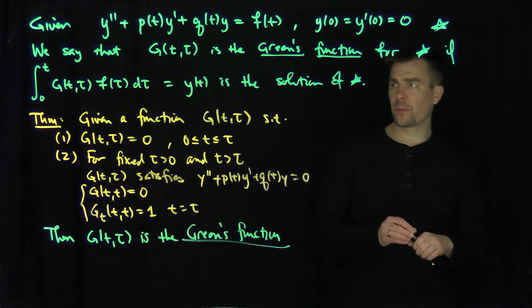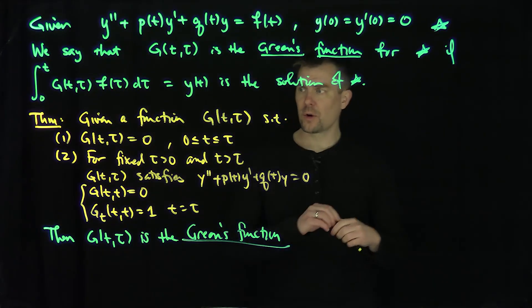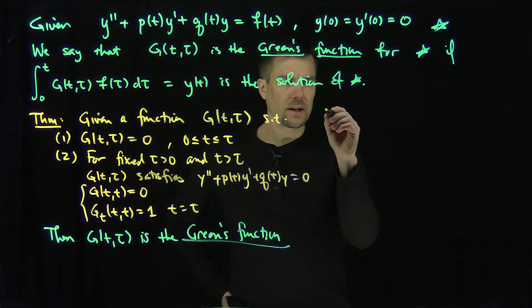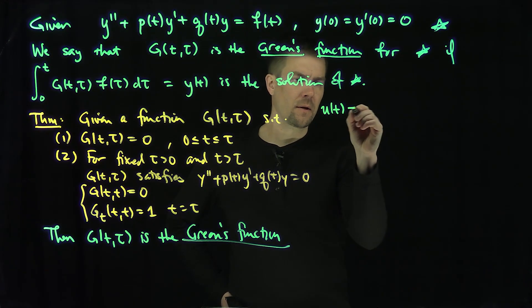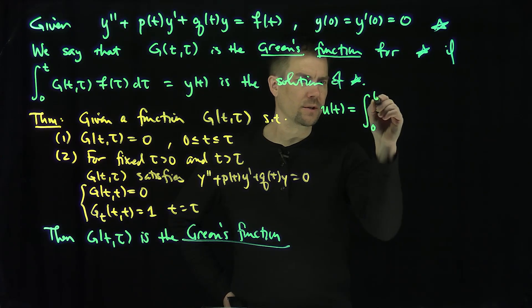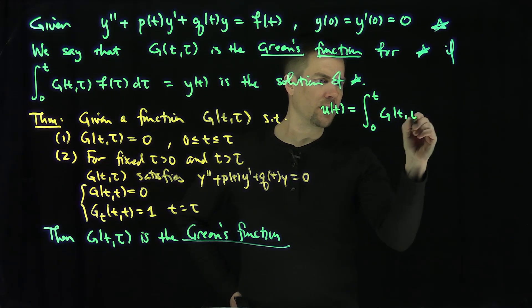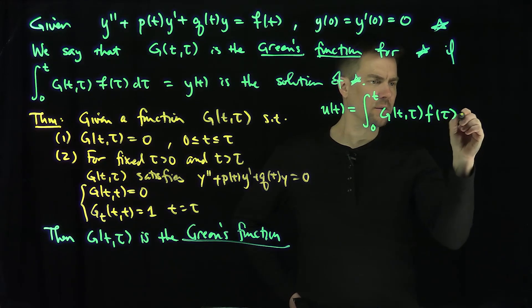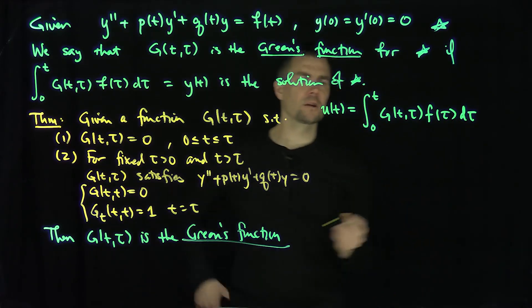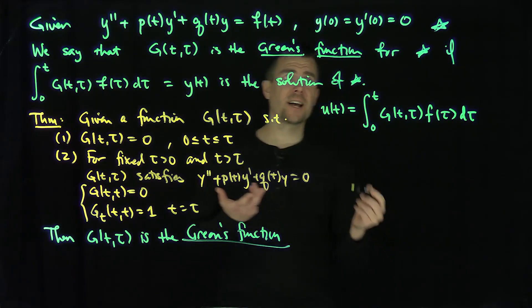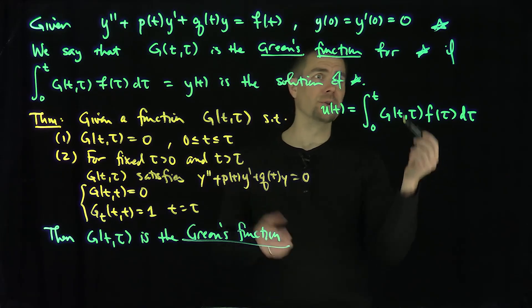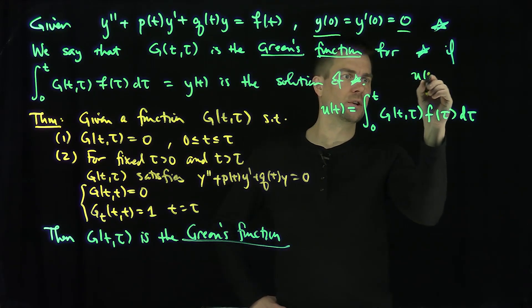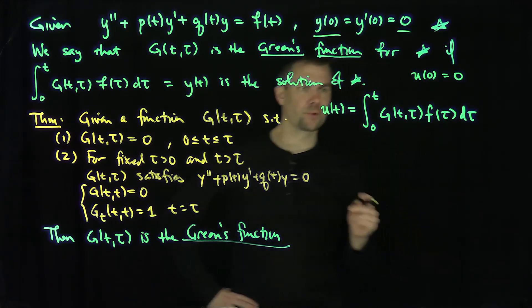How do we prove this theorem? The proof basically boils down to the following. If g has these conditions, let's consider the function u(t) = ∫₀ᵗ g(t, τ) · f(τ) dτ. Clearly, u(0) = 0, so this first initial condition is satisfied.